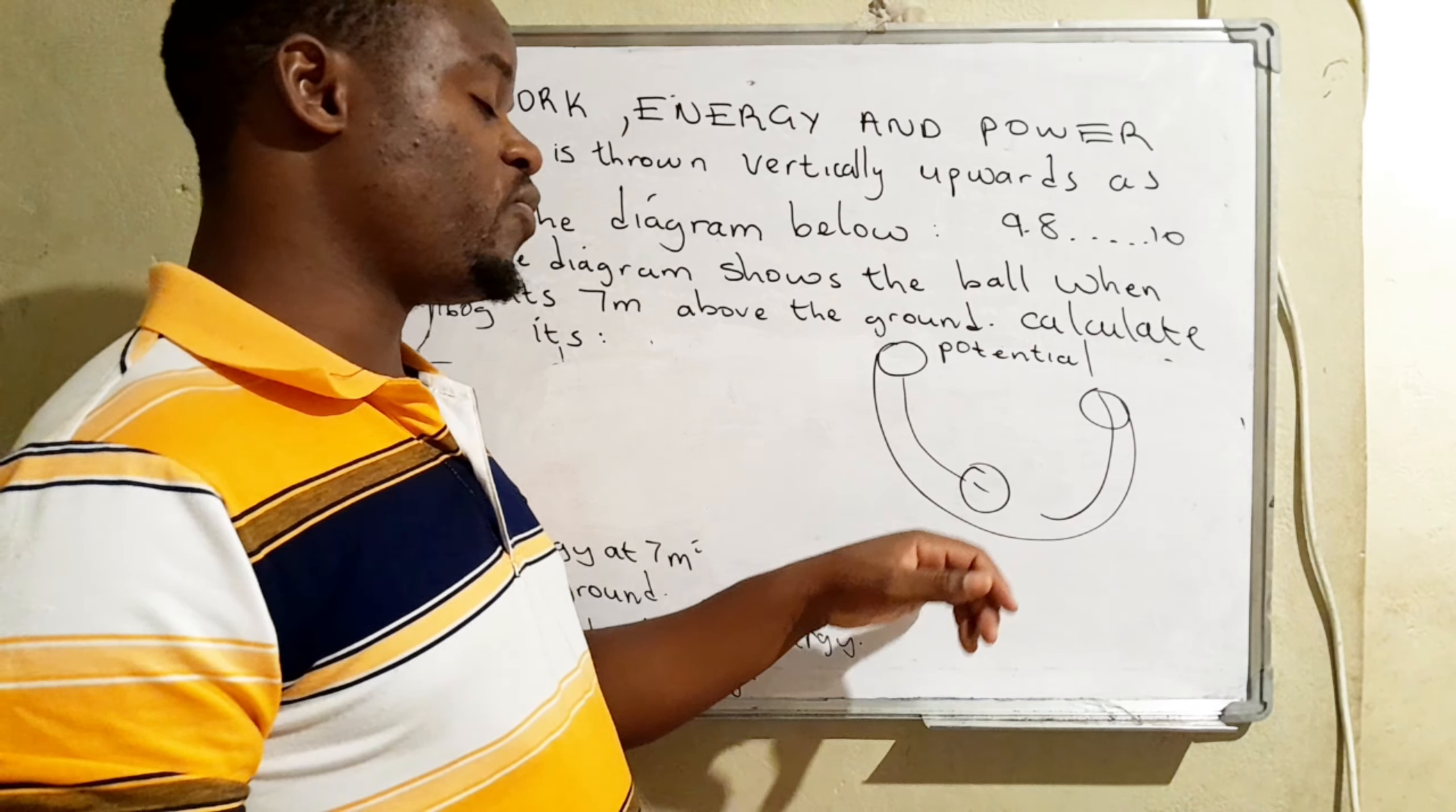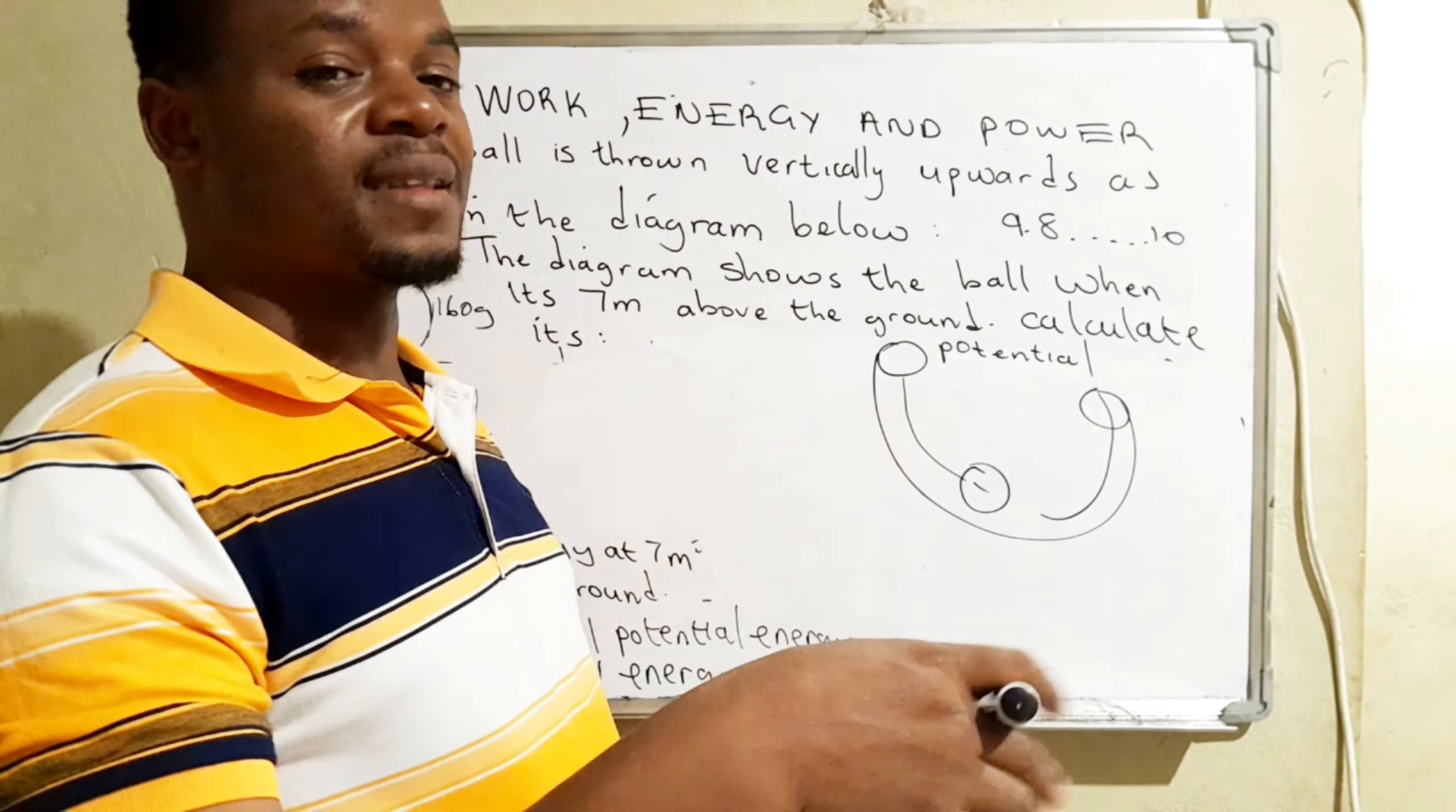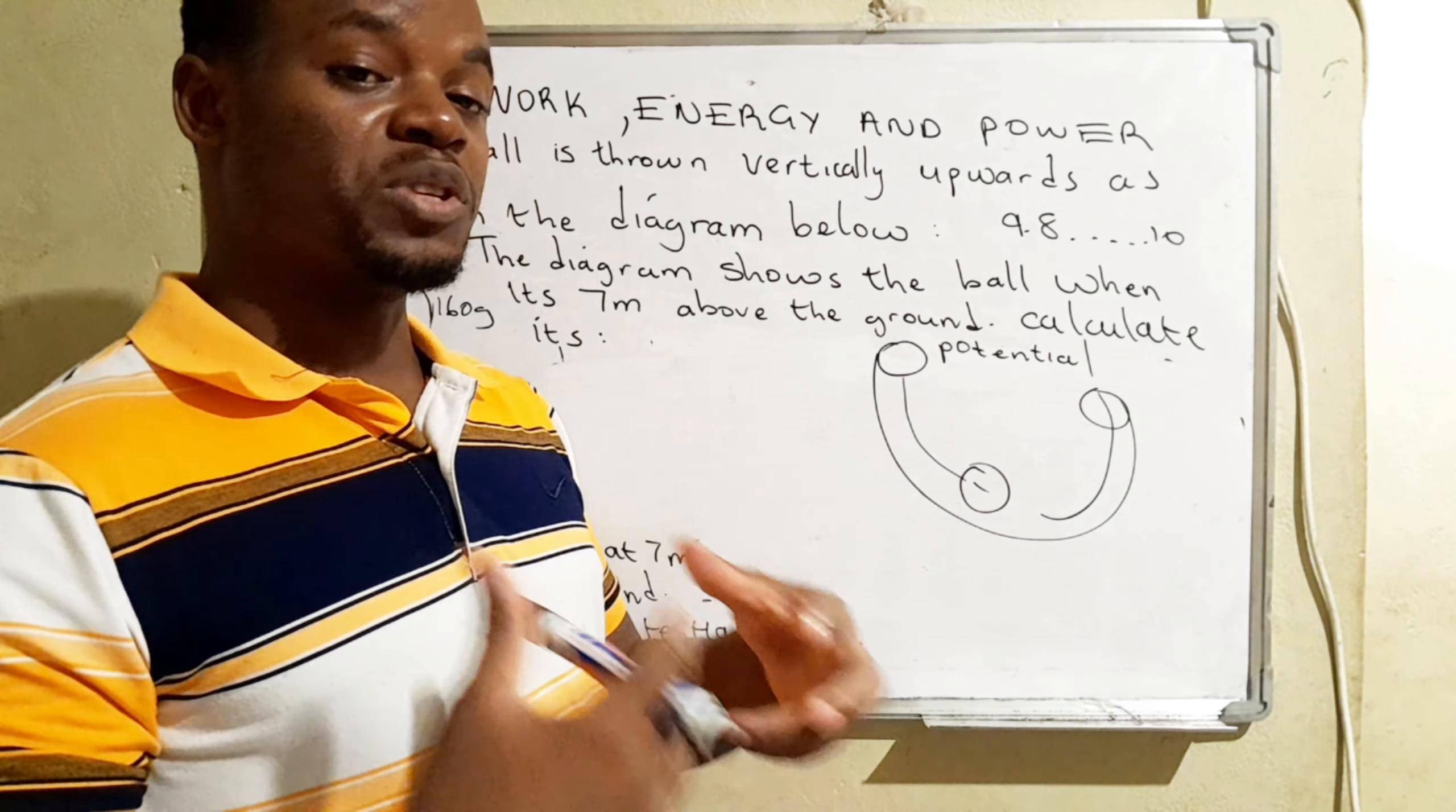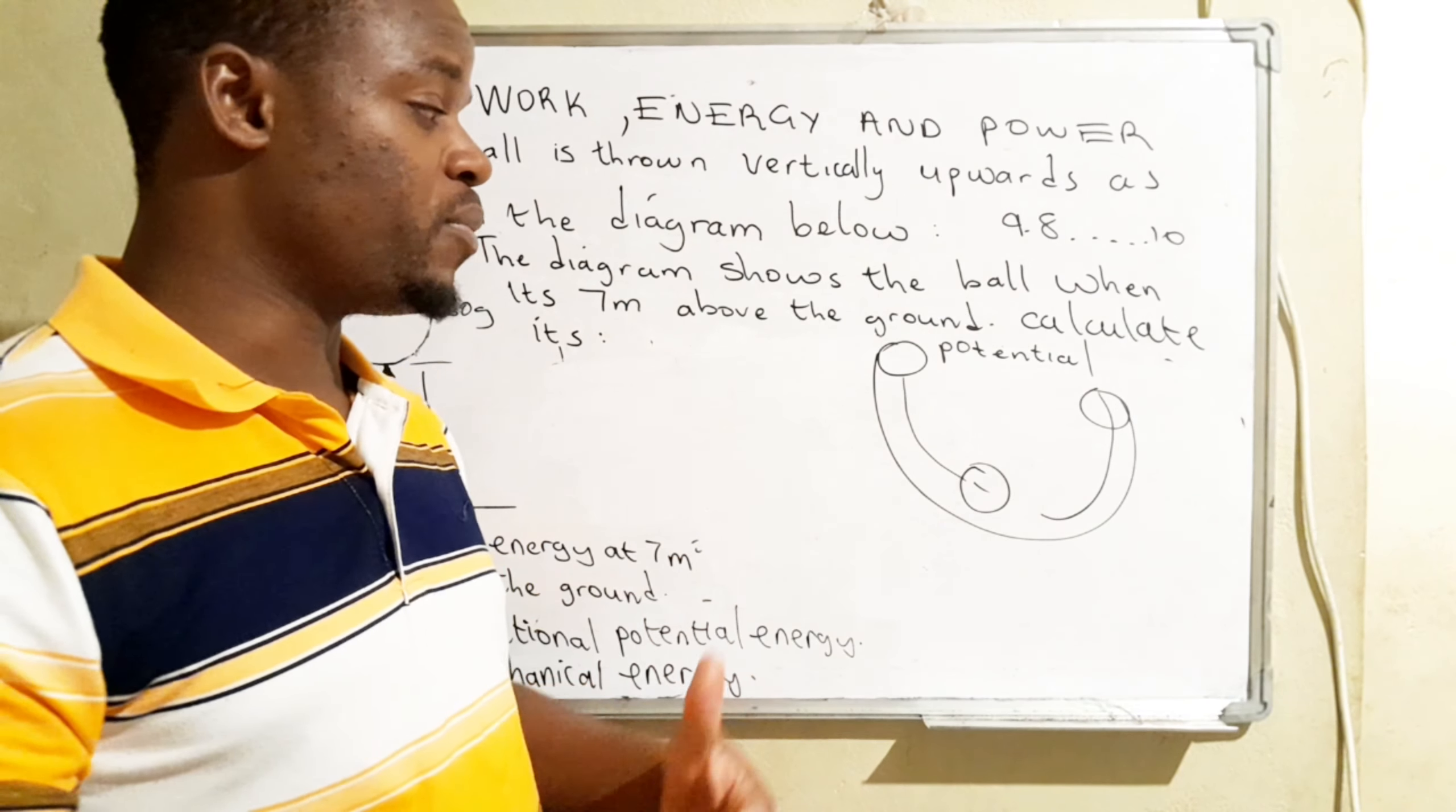Then again, when it begins to fall, that potential energy will be converted into kinetic energy. And then it will keep on oscillating like that, and energy will keep on changing its form. So potential energy is the energy that an object happens to be in possession of when it's stationary. And kinetic energy is the energy that an object happens to be in possession of when it's actually in motion.